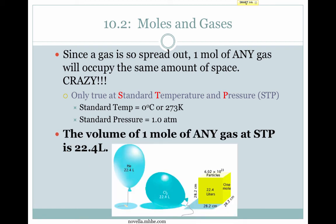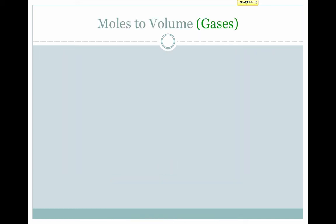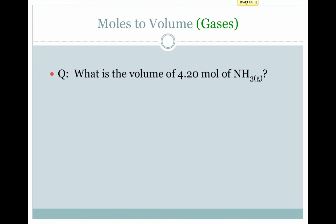Notice here we have two balloons, one filled with helium and one filled with chlorine. Helium is a monatomic element, so it exists by itself, whereas chlorine is a diatomic element, so it exists as Cl2. In each case, if we have 22.4 liters of each at 273 Kelvin and 1 atm, each one will contain 6.02 times 10 to the 23rd particles — either atoms or molecules.